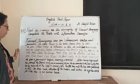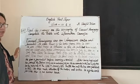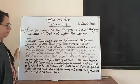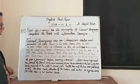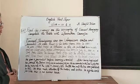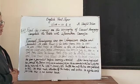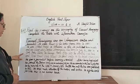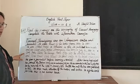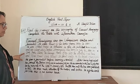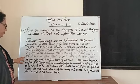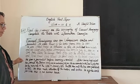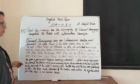He won a Nobel Prize in literature in 1954. He published seven novels and six short story books. Hemingway was born on July 21, 1899 in Oak Park, Illinois, Chicago.